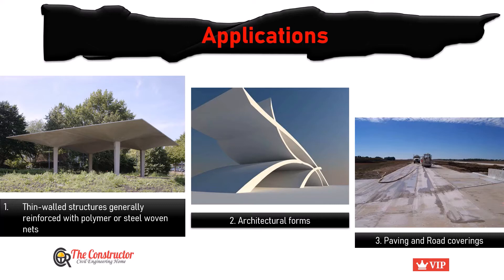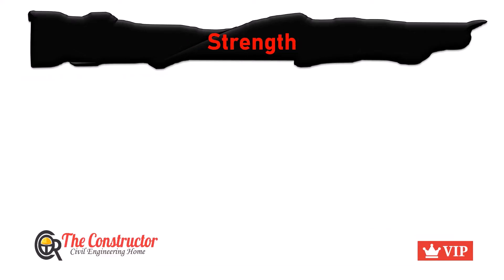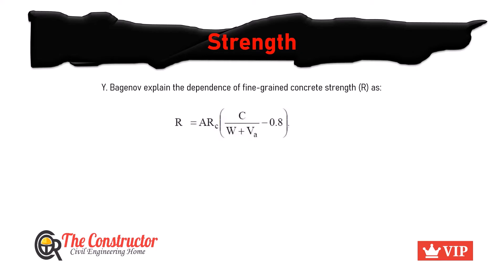Let's discuss the strength of fine grain concrete. Bagnau explained the dependence of fine grain concrete strength using an empirical formula. He represented the strength of fine grain concrete as R, where R is equal to A·Rc multiplied by C divided by W divided by VA, minus 0.8.